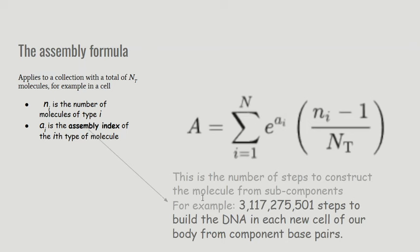The assembly index, he says, is the number of steps to construct the molecule from sub-components. So the human genome, which is actually split over several DNA molecules, is going to require 3 and a bit billion steps to build. It's going to require that number of steps to build the DNA in each new cell in our body from component base pairs.